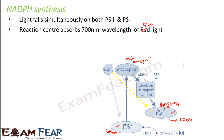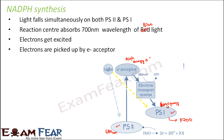The electron which reached PS1 has low energy, but because of the energy absorbed from light, these low energy electrons also get excited. They gain a lot of energy and get excited. As usual, the electron moves to higher energy levels and is then picked up by an electron acceptor — the same process which happened in PS2. Here also, electrons get excited and are picked up by a primary electron acceptor.